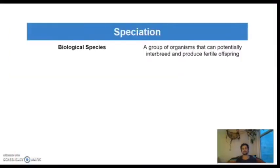What is a species? So the biological species concept defines a species as a group of organisms that can potentially interbreed and produce fertile offspring.